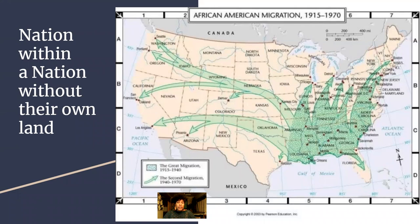The Great Migration lasted from 1915 — history books say about 1915 until 1960, but this map says 1970. Statistics as high as 6 million out of 10 million Black Americans moved out of the South, going North and West. Basically, that's half of all African Americans that were in the United States at that time.